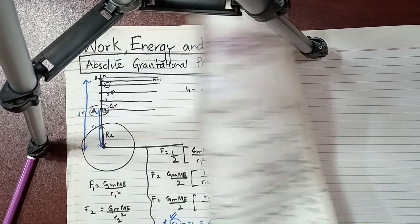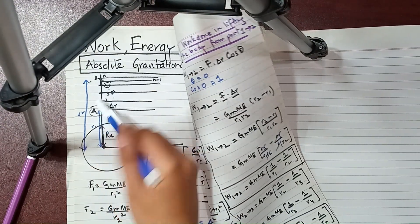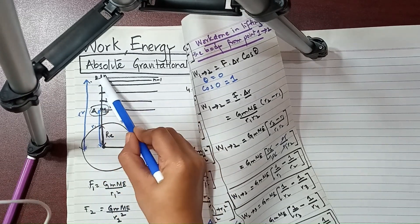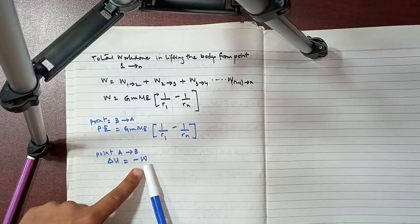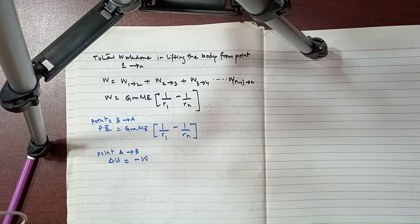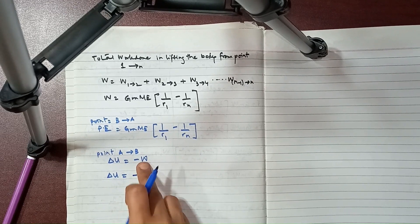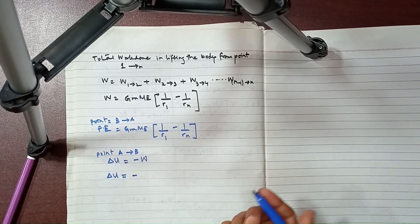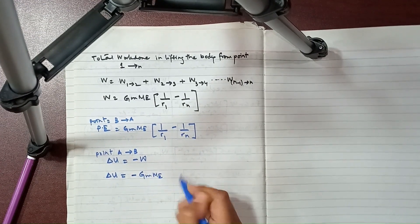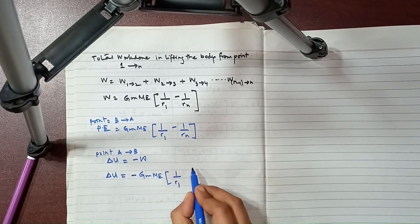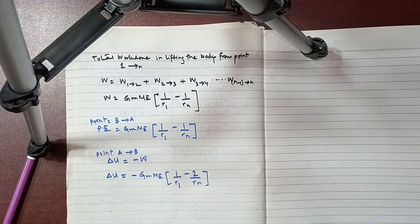Our potential energy is represented by delta U, and that equals minus W. The work done was against gravity from b to a, so if work done from a to b is against gravity, the work done would be negative. That's why delta U equals minus the work done, which gives us GMₑm times (1/r₁ minus 1/rₙ).